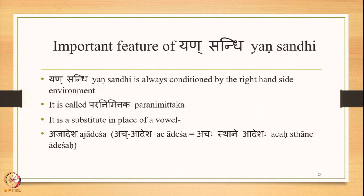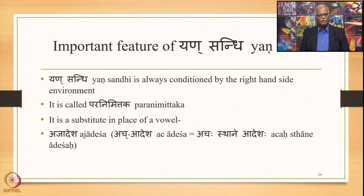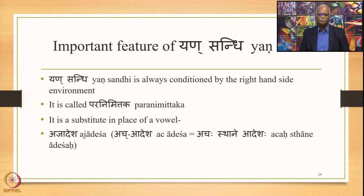After having studied all these individual instances, we note the important feature of Yansandhi: Yansandhi is always conditioned by the right-hand side environment and is therefore called Paranimittaka in the Paninian grammatical tradition. It is a substitute in place of a vowel, so it is called Ajadesha or Achasthane Adesha. These two terms — Paranimittaka and Ajadesha — are used in the Paninian grammatical tradition, and on this basis the concept of Sthanevad Bhava can be explained.